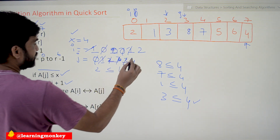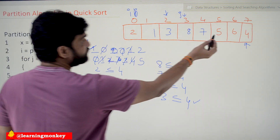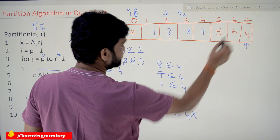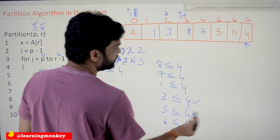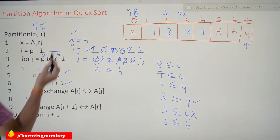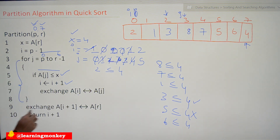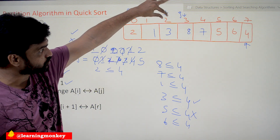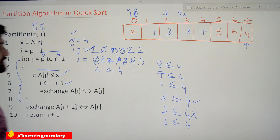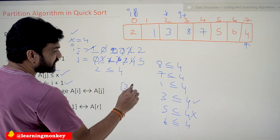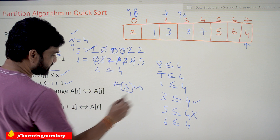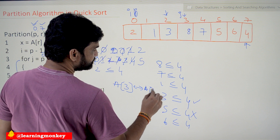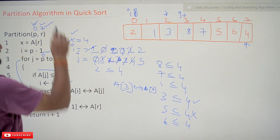j increments to 5. Is a[5] = 5 less than or equal to 4? No. j increments to 6. Is a[6] = 6 less than or equal to 4? No. So all iterations from 0 to 6 are done. At the end, i is at index 2. Now we perform: exchange a[i+1] — which is a[3] — with a[r] — which is a[7], the pivot element 4.